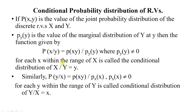In a similar manner, the conditional probability distribution of y given x is given by p(y|x), which is equal to the joint probability distribution p(x,y) divided by the marginal probability of x, p(x), where the denominator p(x) is not equal to 0, meaning it should be greater than 0. For each y within the range of y, this is called the conditional distribution of y given x equal to x.